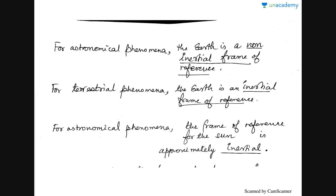Now let me give some important facts regarding frames of reference. For astronomical phenomena — phenomena of space — the Earth is considered to be a non-inertial frame of reference. For terrestrial phenomena — phenomena on the Earth's surface — the Earth is considered an inertial frame of reference. For astronomical phenomena, the Sun's frame of reference is considered to be approximately inertial for most processes.